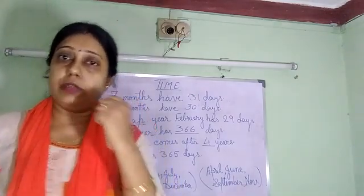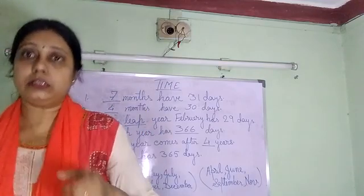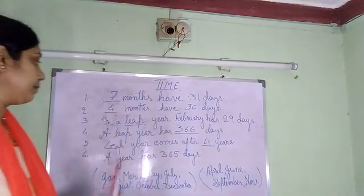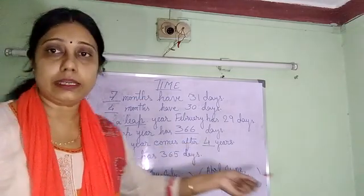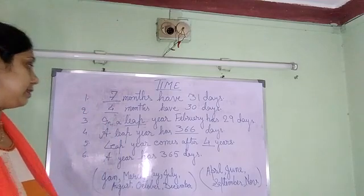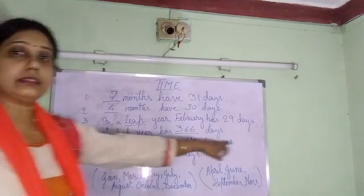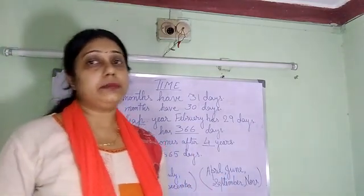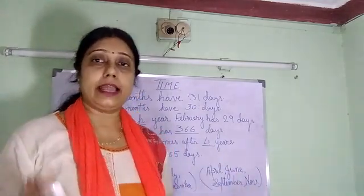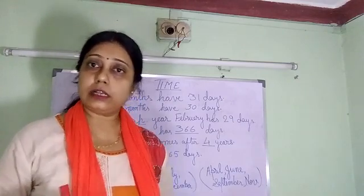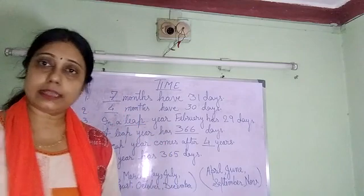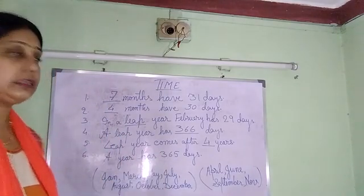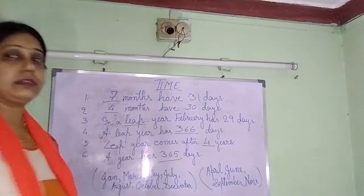So easily on your fist you can find out which month has how many days. A leap year has 366 days. Leap year comes after every 4 years. Whenever in a calendar you see February has 29 days, you can easily tell that year is a leap year with 366 days total. Generally, a year has 365 days.